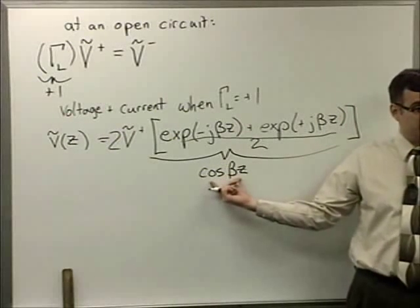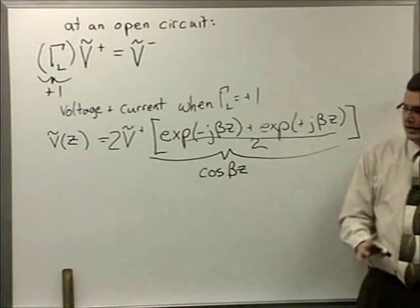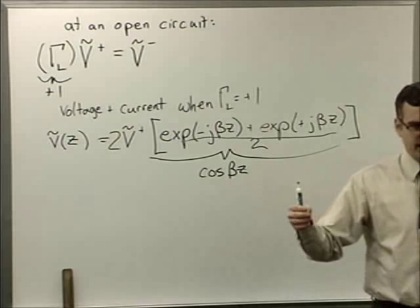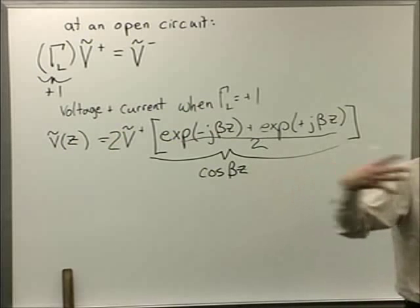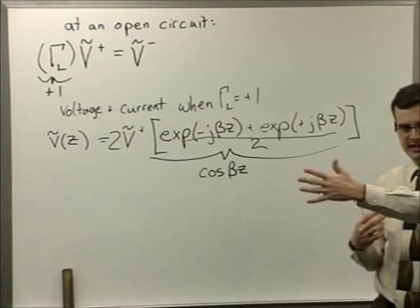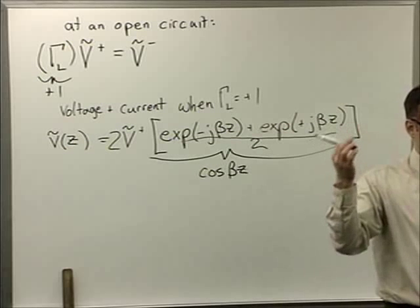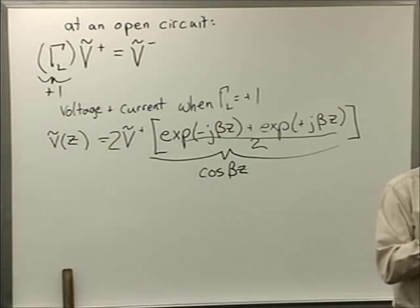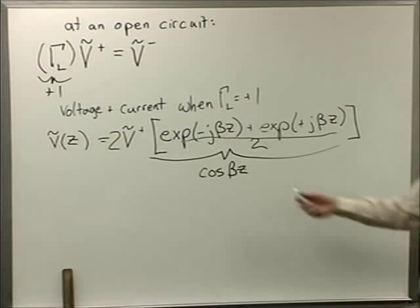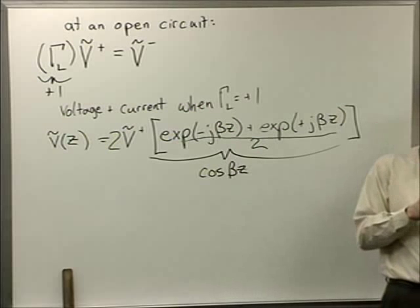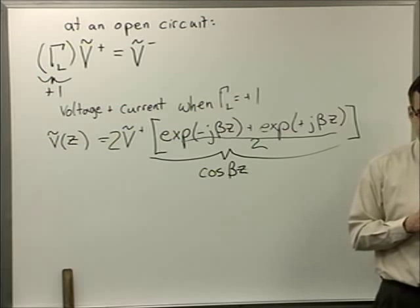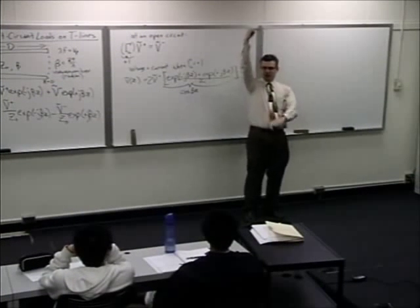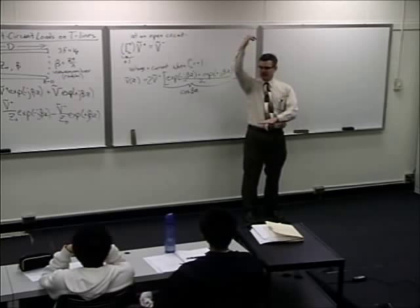The reason is constructive and destructive interference: you have a wave going forward and an equal wave coming back. At some points they constructively interfere and you get a peak; at others they destructively interfere and you get a null. The simplest peak location is at z = 0 — the end of the line — which makes sense: voltage doubles up at an open circuit, just like in the time domain.